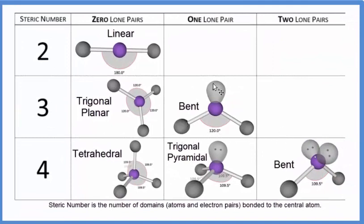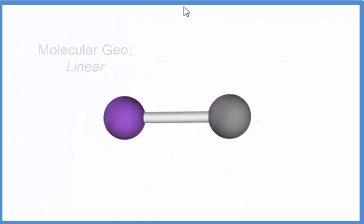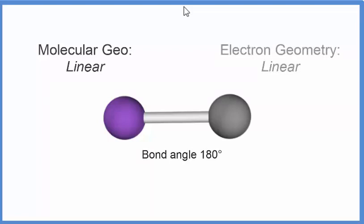There's a link in the description to a video on how to do that. To recap, we have our two atoms, so this is going to be linear. We'll have a bond angle of 180 degrees. And the electron geometry will also be linear.